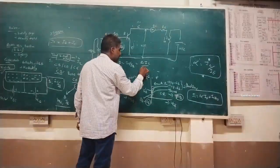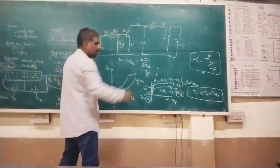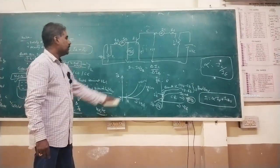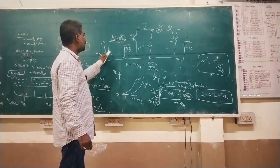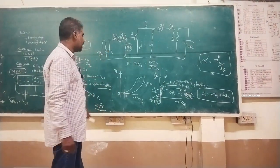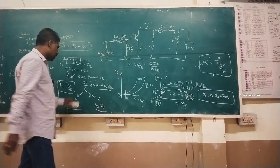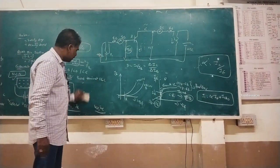Beta can also be written as delta IC divided by delta IB, which is the ratio of change in collector current to change in base current. These are the common emitter (grounded emitter) configuration characteristics.